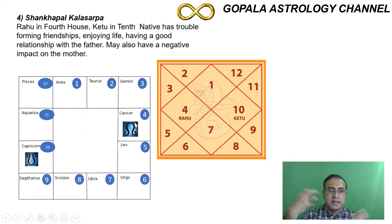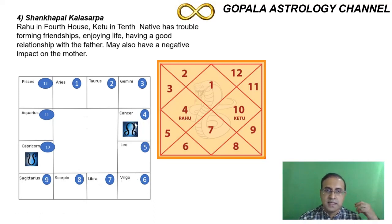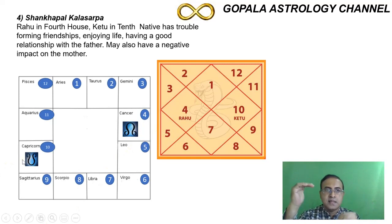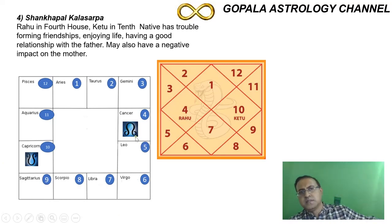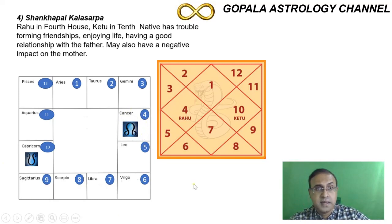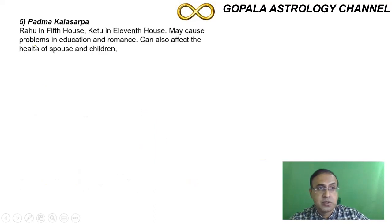The parents want to guide their children, but children with this dosha will never listen — they will have a different frequency. If the evil planet Rahu is in the fourth house it will also bring the person to a foreign land, and they cannot stay in the motherland whenever the shadow of Rahu comes. The next combination is called Padma Kala Sarpa Dosha — Rahu goes to the fifth house and Ketu to the eleventh house.